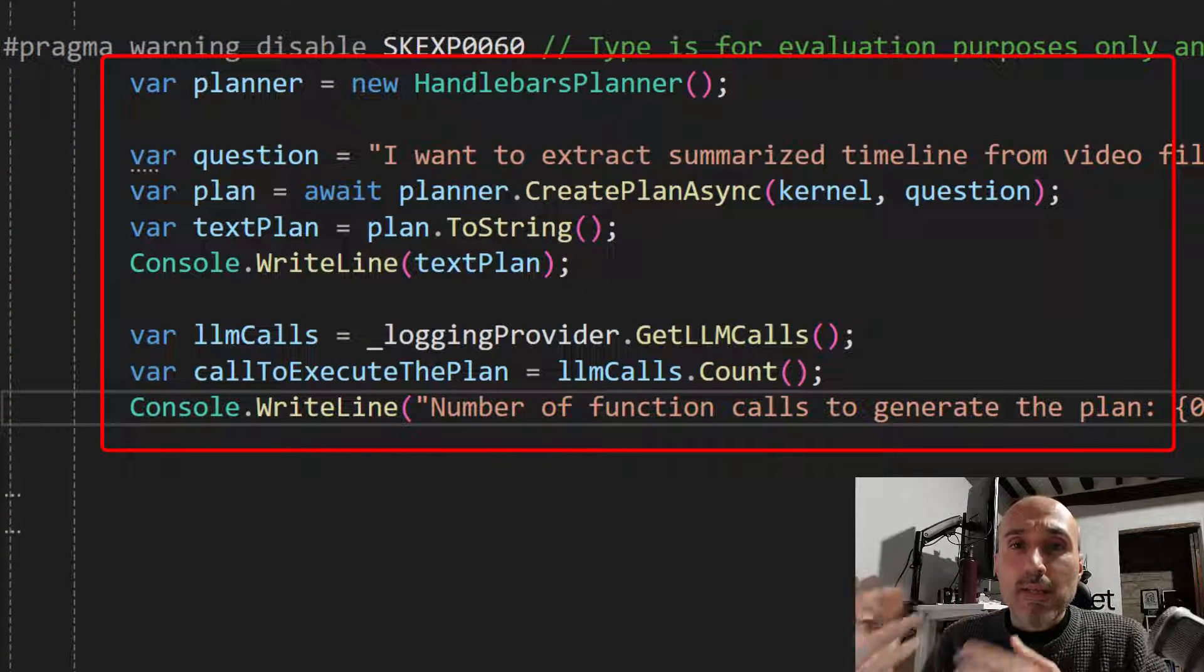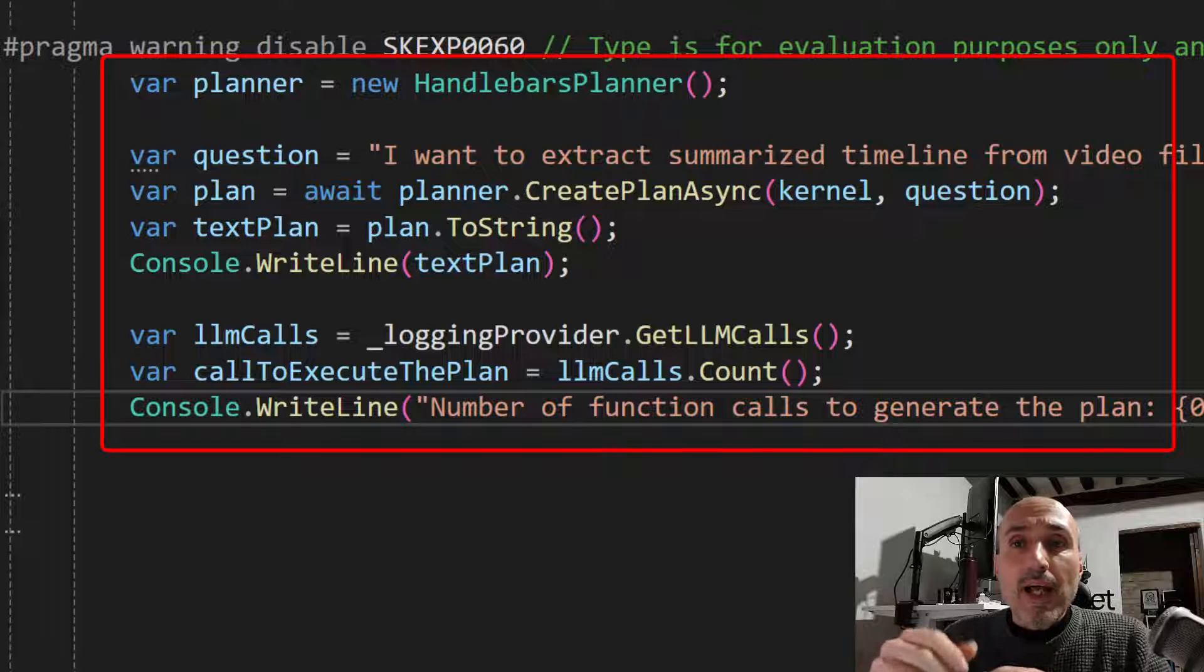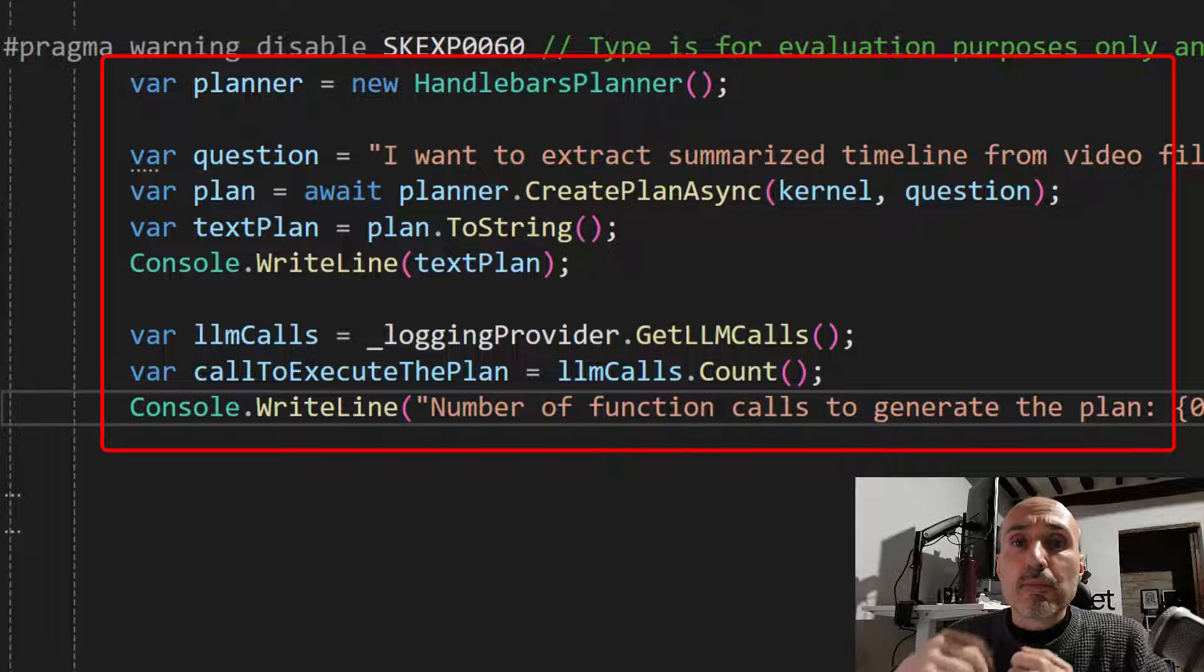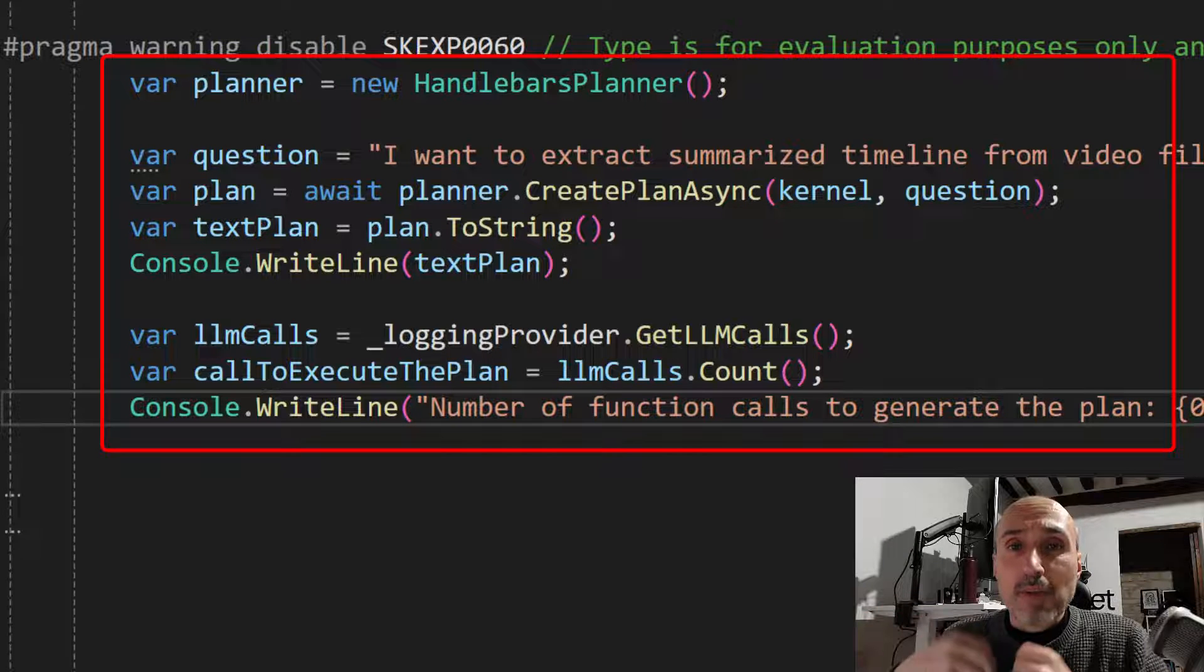And then it is really simple because as you can see in the code, I'm simply creating a planner. Then I simply create a question from the user. And then I use the create plan async to create a plan. And after this, I'm only printing the plan and printing the number of interactions I had with my large language model, thanks to my debugger.